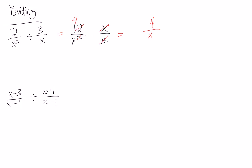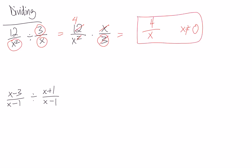One thing you've got to be careful of with non-permissibles is we have to do the bottoms of our original fractions. We have X squared and an X, so both of those would give 0. But because we're dividing, we also have to worry about the top of that second fraction because once we flip it, it becomes the bottom. In this case it's the 3, which doesn't have a non-permissible. But we'd have to worry about it if it were something like 3X or (X minus 2). So with dividing, non-permissibles are the bottoms always, plus the top of the second fraction because it gets flipped.